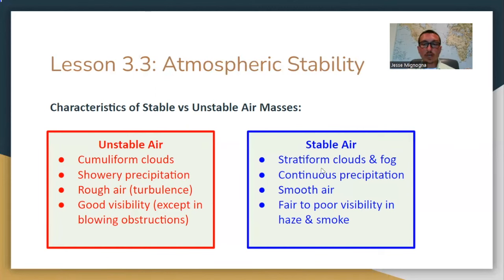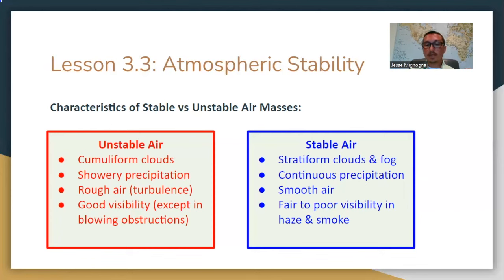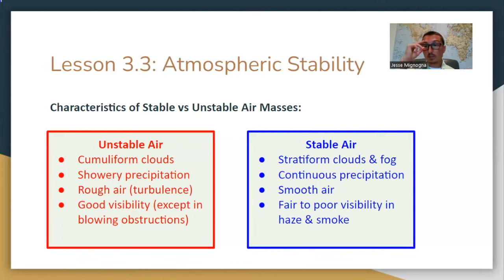Stable air: you get stratus-form clouds and fog, continuous steady precipitation, smoother air, but fair to poor visibility. The bad thing about stable air is poor visibility. For drone pilots that's critical — you're not allowed to fly unless you have three statute miles of visibility. If you cannot see for three miles, you are not allowed to fly your UA. So even if it's good stable air with smooth conditions, if you can't see three statute miles, you're not flying.